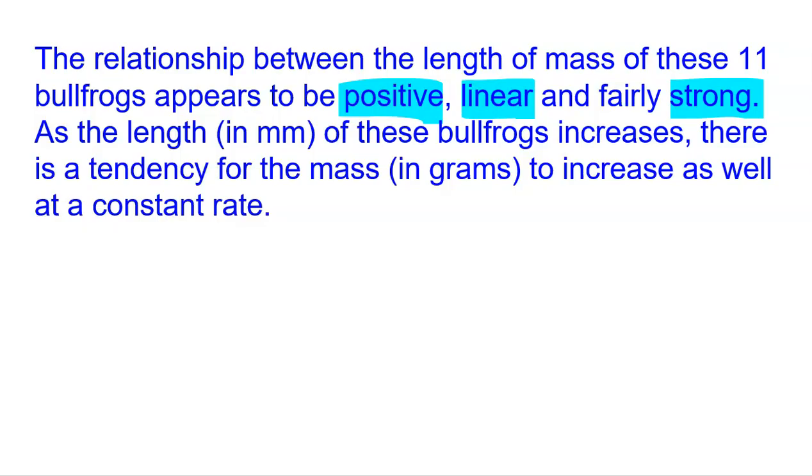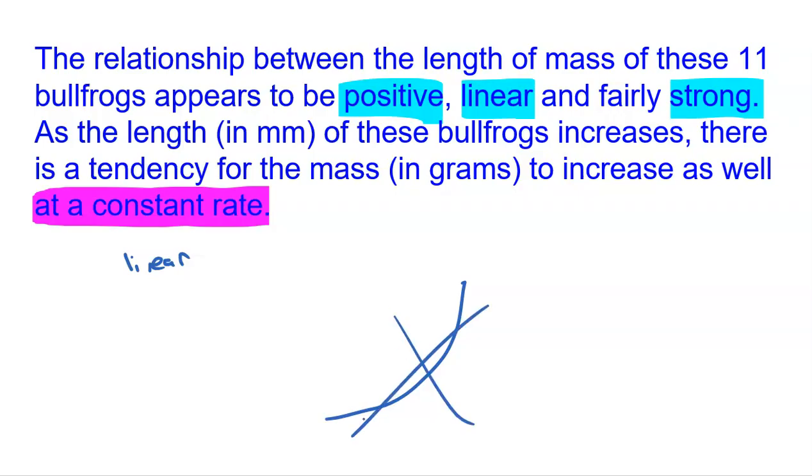Now, here comes my context. As the length in millimeters of these bullfrogs increase, there is a tendency for the mass to increase as well at a constant rate. Having this at a constant rate is actually really important because that's emphasizing the fact that it's linear because an exponential curve increases as well, but it doesn't increase at a constant rate. It increases at an increasing rate, but that's exponential. We're definitely not that. We're linear, which means that we're increasing at a constant rate. Other key things we'd like to see here is don't say that for all bullfrogs. Make sure that your statement doesn't say all bullfrogs have relationship that's positive and you're strong. We actually don't know that. All we know is what we're looking at, and that is relationship between these 11 bullfrogs. So make sure you emphasize that as well in your answer. Hopefully a pretty simple answer there and one that you could definitely ace.